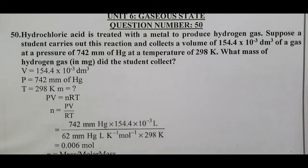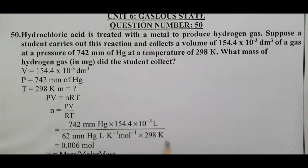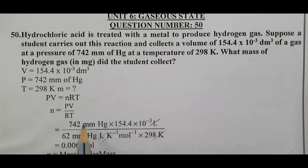R in units of mmHg is 62 mmHg·L·K⁻¹·mol⁻¹, and temperature = 298 K. The Kelvin units cancel, liters cancel, and mmHg cancel. Bringing mol⁻¹ to the numerator gives us moles as the final unit for n.